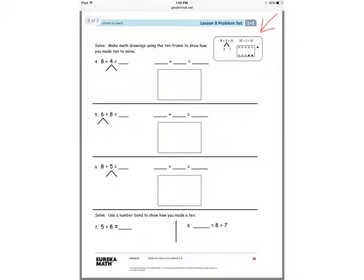The number sentence says 8 plus 3 equals 11. In order to make a 10, we need to move 2 away from the 3 over to the 8.